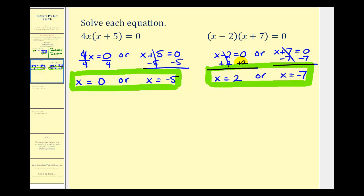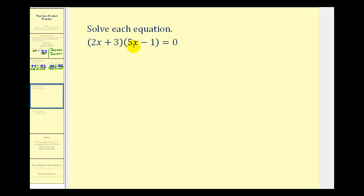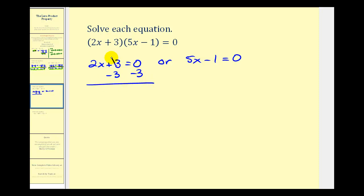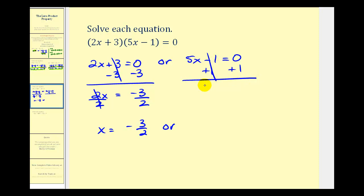Hopefully now you're beginning to see why it's beneficial to have a polynomial equation in factored form. Here we have the quantity two x plus three times the quantity five x minus one equals zero. Either the first factor of two x plus three must equal zero, or the second factor of five x minus one must equal zero. Subtracting three and dividing by two gives x equals negative three halves. Adding one and dividing by five gives x equals one fifth.